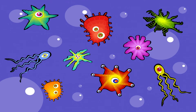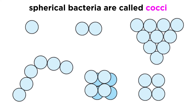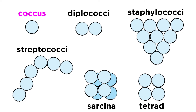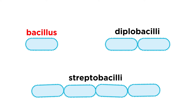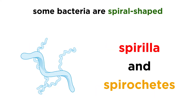Bacteria come in all kinds of shapes, but the most common are spherical ones called cocci. One of these is a coccus, two stuck together are diplococci, a chain of them makes streptococci, and a bunch will be called staphylococci. Rod-shaped bacteria are called bacilli, and these can exist as a lone bacillus or a chain of streptobacilli. Then there are the spiral-shaped bacteria, like spirilla or spirochetes.